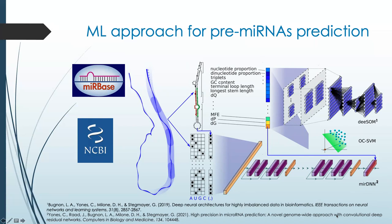MyrDNN is a convolutional deep neural network based on residual networks. The first two models, DSOM and OCSVM, were fit with 83 features extracted from the sequence and secondary structure, while MyrDNN received the RNA sequence, the predicted secondary structure, and the minimum free energy release when folded for predicting the probability of being a microRNA precursor.